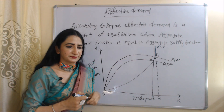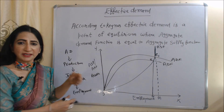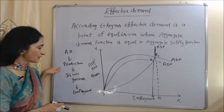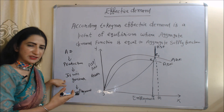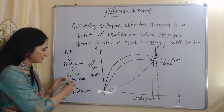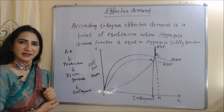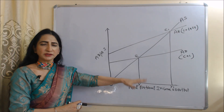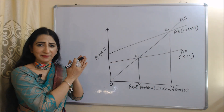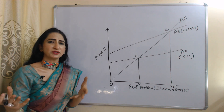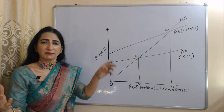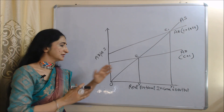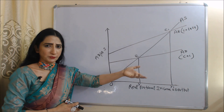When aggregate demand increases, production also increases, generating more jobs in the economy, and as a result employment increases. Employment has increased from ON to ON1, and at E1 — the full employment point — all laborers are fully utilized. Now we will see the level of real national income and output using one more diagram.